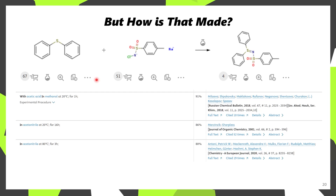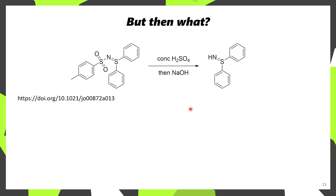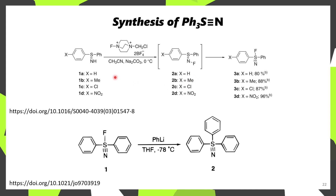I thought it would be useful to show how this triaryl sulfur-triple-bond-nitrogen reagent could be prepared. This first starts with the reaction of chloramine T with diphenyl thioether, resulting in the formation of the corresponding S=N species. In order to remove that protecting group, it needs to be treated with concentrated sulfuric acid, which forms the tosylate salt, so it needs to be free-based with sodium hydroxide. Once you have the S=NH derivative, it's possible to convert it to the S≡N reagent possessing an alpha-fluorine on the sulfur using Selectfluor. This is then reacted with phenyllithium, which displaces the fluoride with an aryl group, affording the final product.